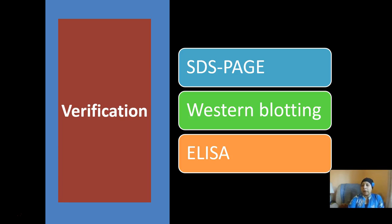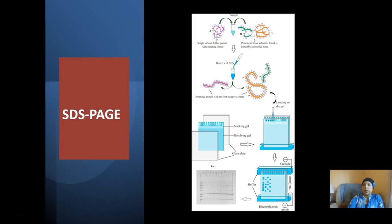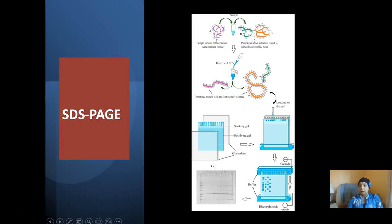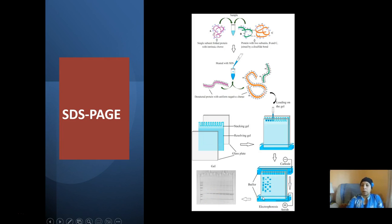Once we have our samples, we can verify them through several techniques. The three most commonly used are SDS-PAGE, western blotting, and ELISA. SDS-PAGE is polyacrylamide gel electrophoresis where SDS — an ionic detergent — makes everything negatively charged and denatures the proteins. We add SDS-containing loading dye to the protein extract, heat it so all proteins are in their primary structure, load the samples onto a polyacrylamide gel matrix, and run it using an electric current. This separates proteins by size, and we can look at the pattern of bands across different samples.